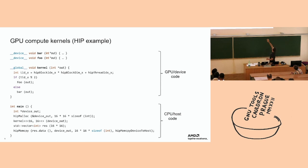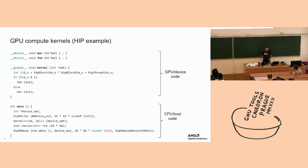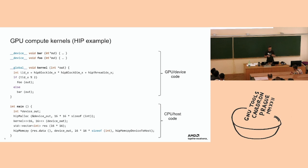The two 16s in the kernel dispatch define the size of the work grid. We're executing the kernel on 16 groups of 16 items each, for a total of 256 work items. In one dimension, that's a line of 256 items divided into 16 groups. The kernel function gets called once for each work item, for a total of 256 invocations. You can also have a two-dimension or three-dimension grid, depending on your problem.